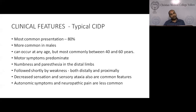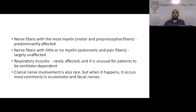The typical CIDP presentation is the most common, more common in males, can occur at any age but most commonly between 40 to 60. Motor symptoms predominate. Patients have numbness, paresthesia in distal limbs followed by weakness both distally and proximally, decreased sensation, and sensory ataxia. Autonomic symptoms and neuropathic pain are much less common. Nerve fibers with most myelin — motor and proprioceptive fibers — are predominantly affected, while autonomic and pain fibers are largely unaffected.